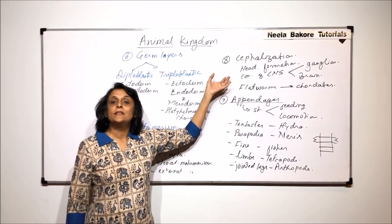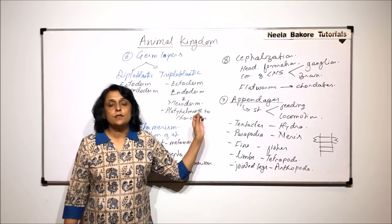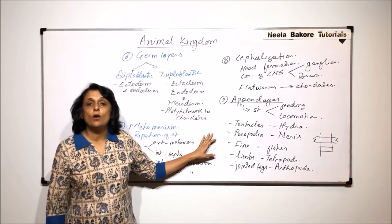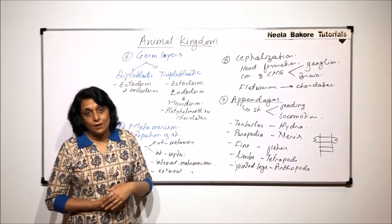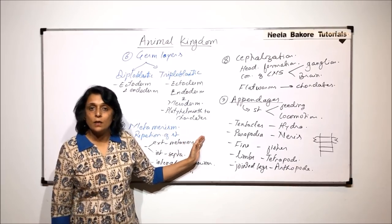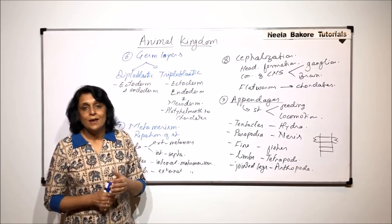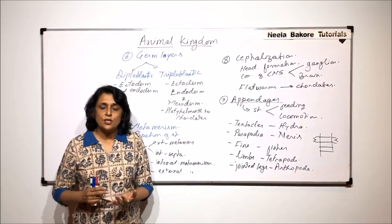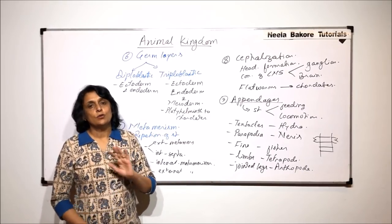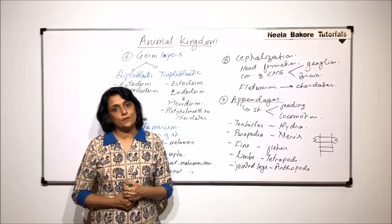So the idea of discussing all these parameters — germ layers, metamerism, cephalization, appendages — is to understand the diversity or variety found in the animal kingdom. In the next part, we will see the diversity in the animal kingdom on the basis of internal organ systems, like digestive system, respiration, nervous system, and excretion. That would be another thing which helps us understand this variety seen in this kingdom.